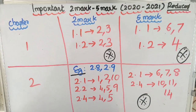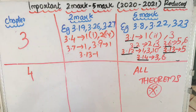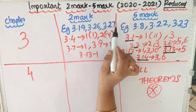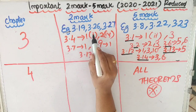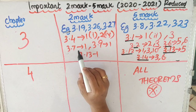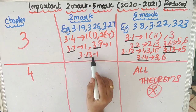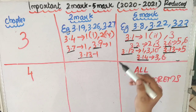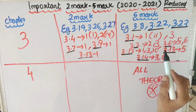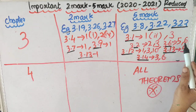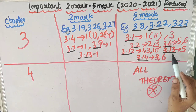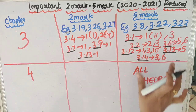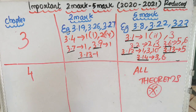For the third chapter, the important 2-mark examples are 3.19, 3.26, and 3.27. Important exercises: 3.4 exercise first question first subdivision, second question fourth subdivision. 3.7 exercise first question. 3.9 exercise first question. 3.13 exercise first question. For the 5-mark questions, examples 3.8, 3.22, 3.23. 3.1 exercise first question second subdivision, third question. 3.2 exercise first question, questions 1 and 3. 3.6 exercise first question, questions 5 and 6. 3.12 exercise first question. 3.13 exercise questions 3 and 6.